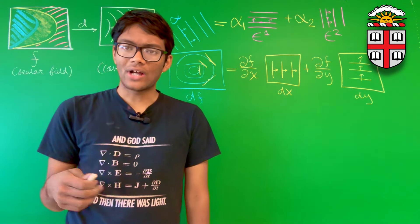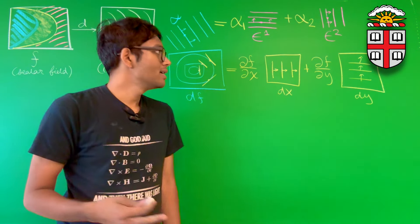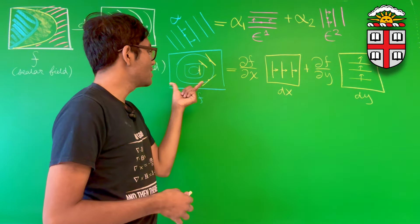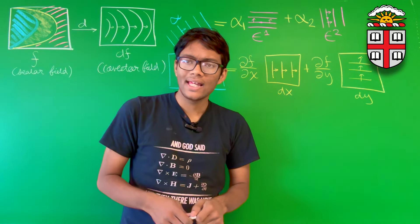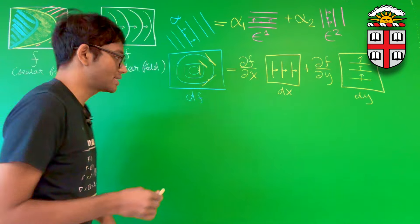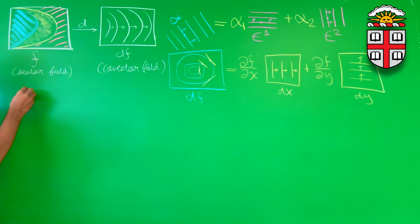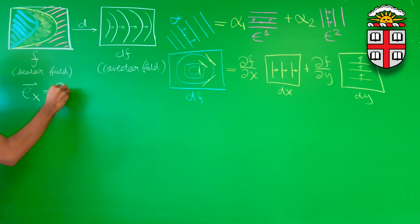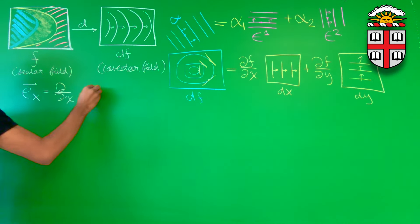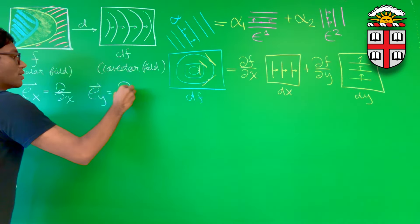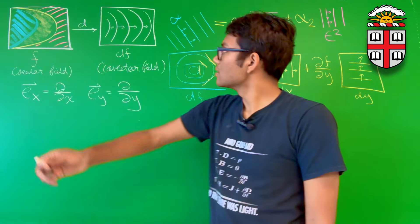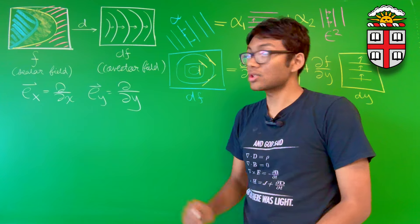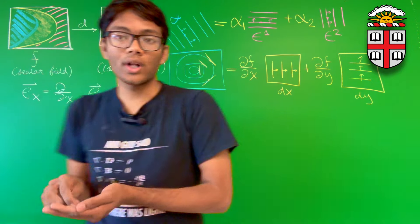To start our investigation, let's consider the basis vectors e_x and e_y. Recall e_x is ∂/∂x and e_y is ∂/∂y. How do these look on the co-vector field df? When we ask how many contour lines does our basis vector pierce, what we're really asking is: what is our co-vector field df applied to our basis vector e_x?